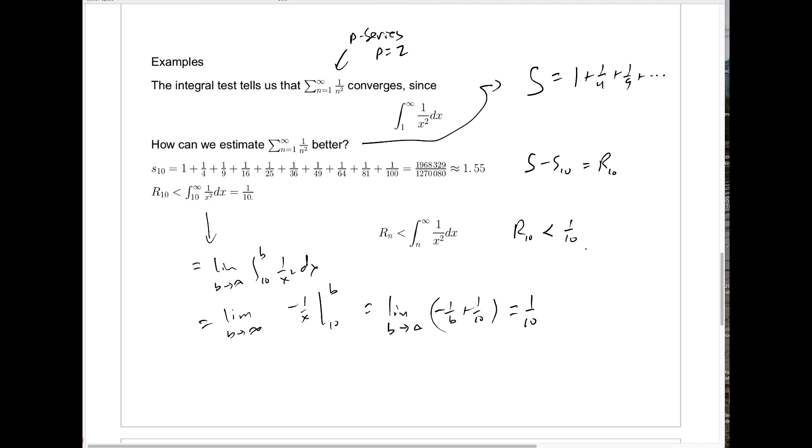How could you get an estimate that's good to three or four decimal places? This exact same computation would tell us that the error R sub n is less than the integral from n to infinity of 1 over x squared dx. You just do the same thing with an n in place of the 10, and you'll see easily that this is 1 over n. So if you need an error less than 1 one millionth to get six decimal place accuracy, just choose n equals a million, and then R sub a million is less than 1 one millionth.